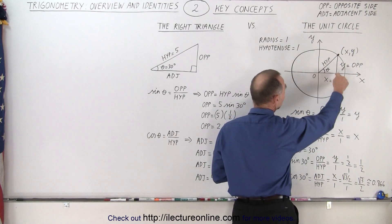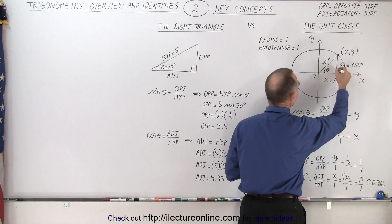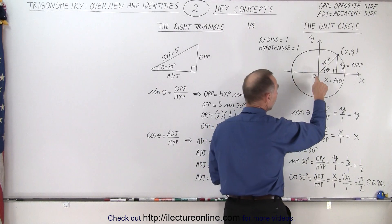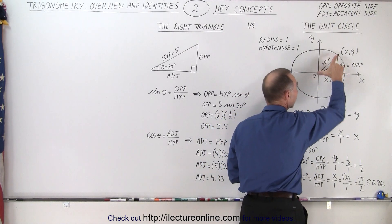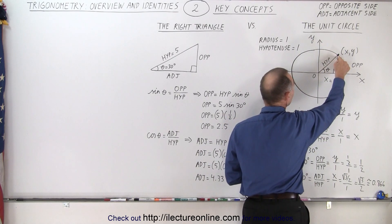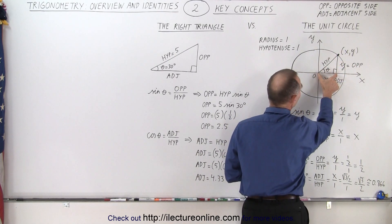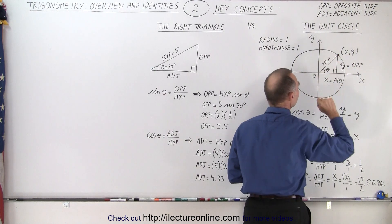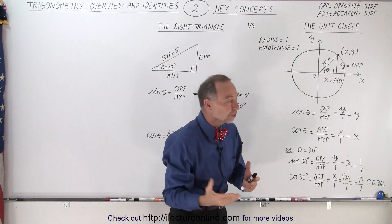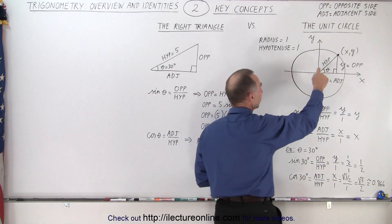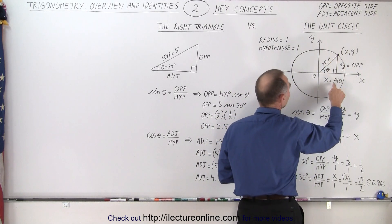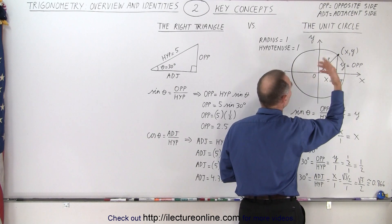If you draw a right triangle in there like this, and take a point on that circle, you then realize that the distance from the origin to the point of that circle equals 1. You can then see that that point has coordinates x and y. The line that connects the point to the origin is the hypotenuse of that right triangle. I use HYP for hypotenuse, OPP for opposite side, and ADJ for adjacent side.